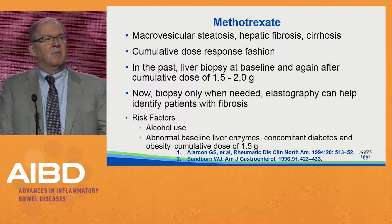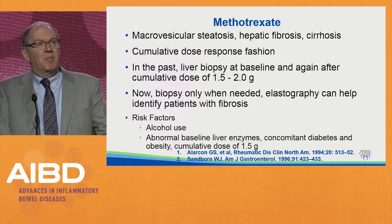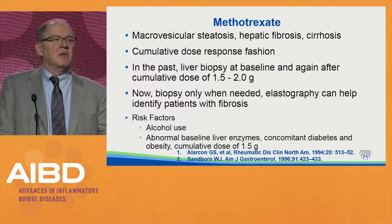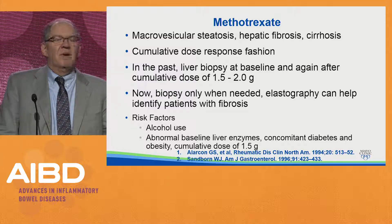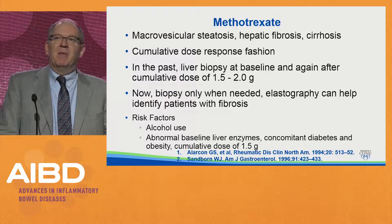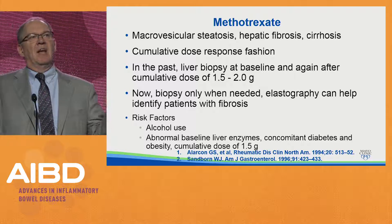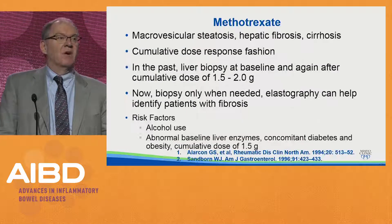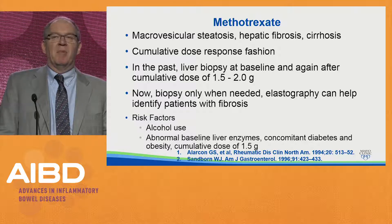Methotrexate is always a concern for liver abnormalities, and you're more likely to see this in patients with risk factors such as alcohol use, abnormal baseline LFTs, obesity, or type 2 diabetes. The historical practice was to do a liver biopsy once the patient had received a cumulative dose of 1.5 to 2 grams, but we're really not doing that anymore. When you start seeing persistently elevated transaminases, you need to think about it. For patients with risk factors for fatty liver, alcohol use, or obesity, think twice before using methotrexate.